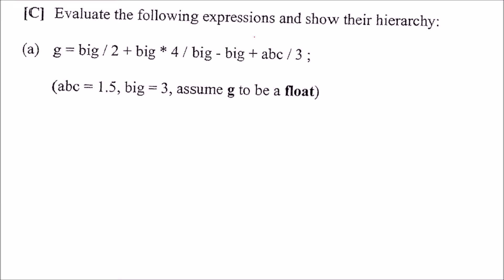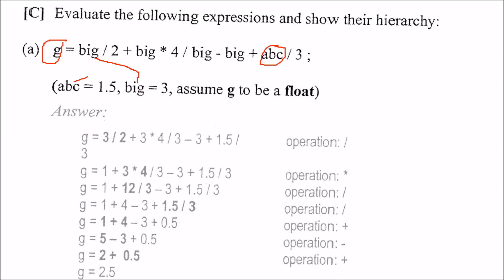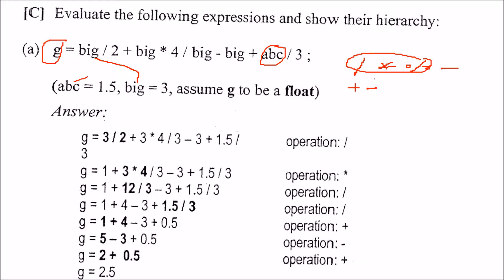Now we have to evaluate these expressions and show their hierarchy also. How to show this? The value we will put in place of abc we will put here 1.5, big will put 3 and we will assume g to be float. So answer will come in float. So let us start. First of all, we know that the division and multiplication have the highest precedence followed by the plus and minus and here also, modulo also. Because the modulo is not there but still, these three have highest preference then we have followed by plus minus.